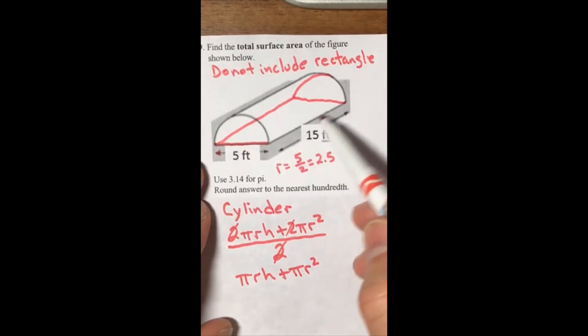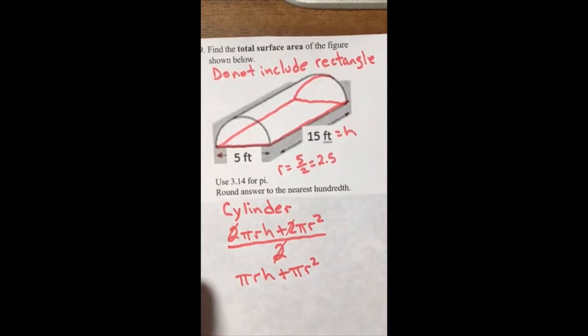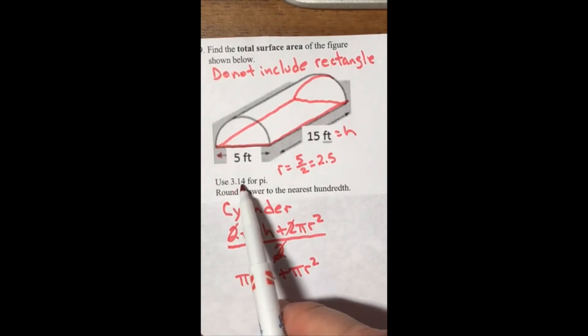The radius is 2.5. The height goes from base to base. Here is the height, that's going to equal 15. Now we have everything we need to finish this problem and replace π with 3.14.